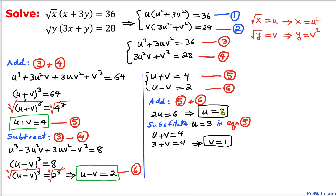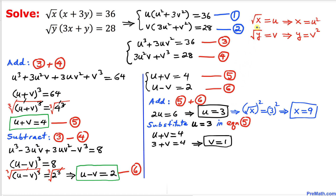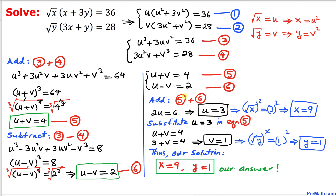Now, since u equals square root of x, we have square root of x equals 3. Taking the square on both sides gives x equals 9. Likewise, since v equals square root of y, we have square root of y equals 1, and squaring both sides gives y equals 1. Thus our solution is x equals 9 and y equals 1, and that's our final answer.